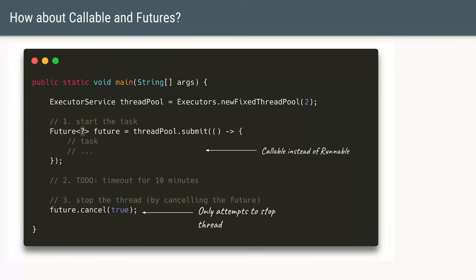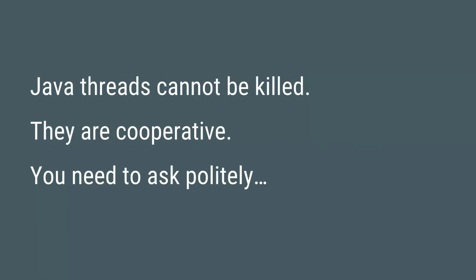So even using a thread pool is not enough. What's the third option? Maybe we can try a Callable instead of a Runnable. We use the same thread pool but submit a Callable. The thread pool returns a handle as a Future, and Future has a cancel method. So after waiting 10 minutes, if we call future.cancel it might stop the thread. But again, the documentation says it does not guarantee stopping the task — it only attempts to stop the thread.